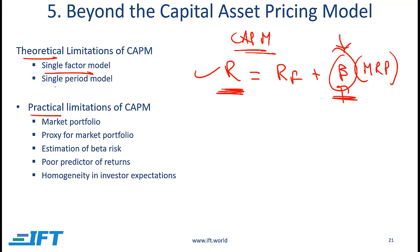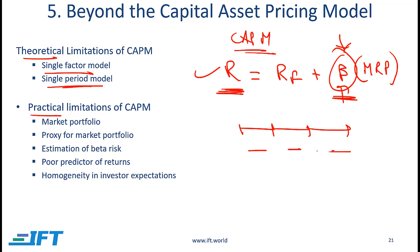Then we have the fact that CAPM is a single period model. The issue is that if we have factors that change over time — if the value of the factor changes from period to period — that's a problem. Take beta for example: we assume in CAPM that beta is fixed, but if the beta of a stock varies over time and across different periods, then CAPM does not work very well.